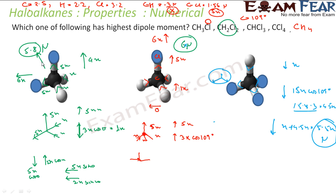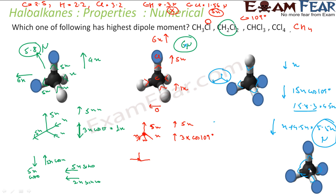For CCl4, all four chlorine molecules are arranged symmetrically. They all pull at equal angles of 109°, so the net dipole is zero — perfect symmetry means complete cancellation. Similarly, for CH4, each hydrogen is trying to give electrons to carbon, but they are also symmetrically arranged, so the total dipole is also zero.